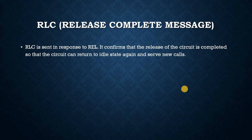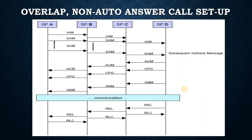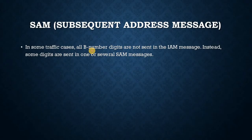Overlap, non-auto answer call setup. In the overlap call setup, all digits are not sent in the IAM. The remaining digits are sent in SAM messages. This can make a call setup faster — for example, when, due to interworking, dialed digits are delivered slowly, but the first digits are sufficient for the transit exchange to route the call. SAM, Subsequent Address Message. In some traffic cases, all B-number digits are not sent in the IAM message; instead, some digits are sent in one or several SAM messages.